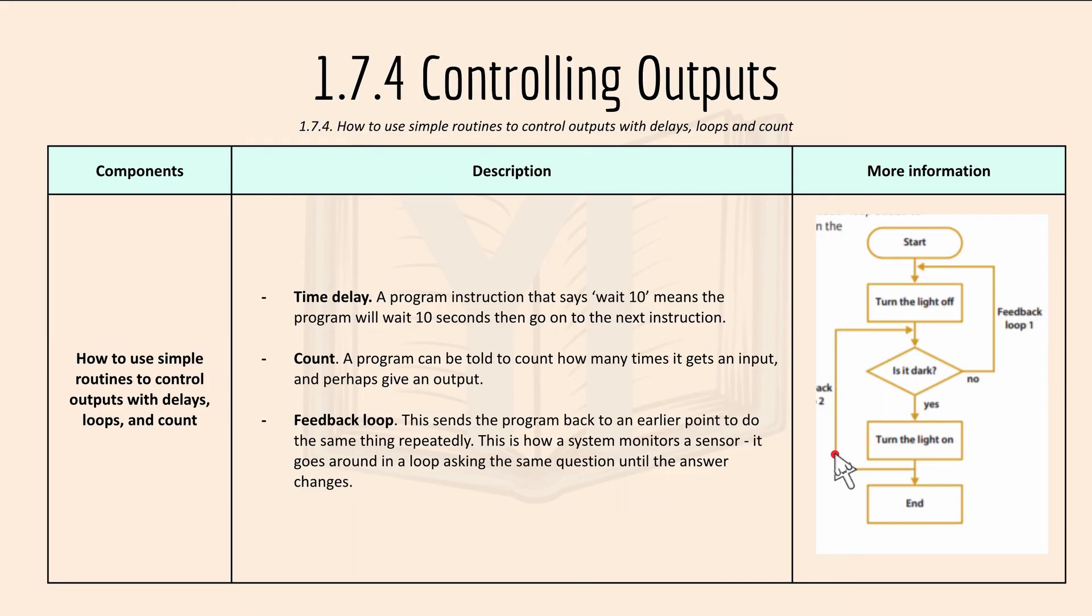Then we have lastly controlling outputs and how to use simple routines to control outputs with delays, loops and count. So for time delay, a program instruction that says wait 10 means the program will wait for 10 seconds then go on to the next instruction.